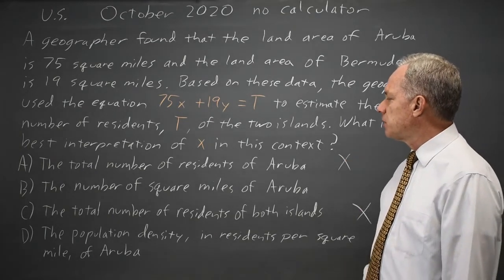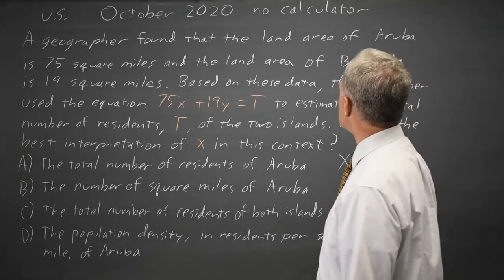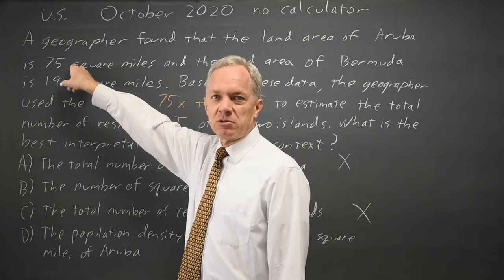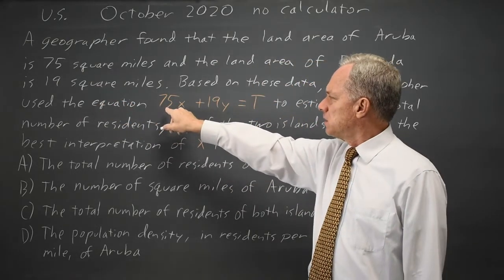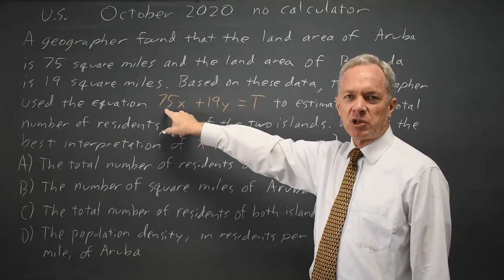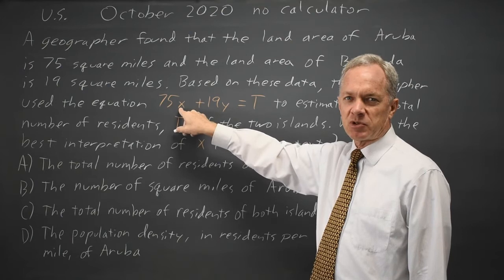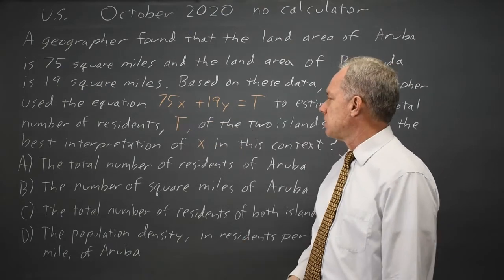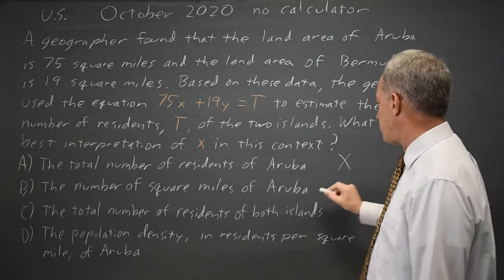Could x be the number of square miles of Aruba? We're told Aruba is 75 square miles. There's no logical reason you would multiply the number of square miles by the number of square miles. That does not seem connected to t, the total number of residents.